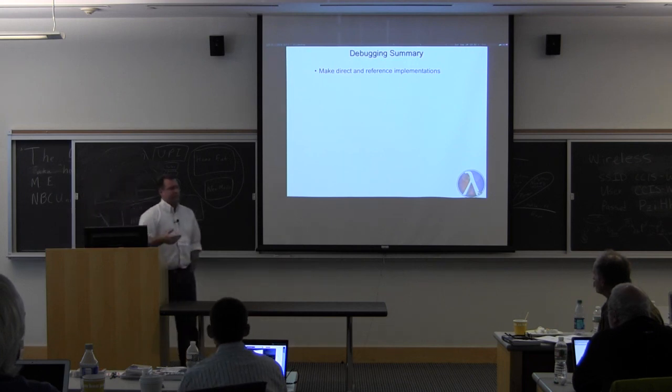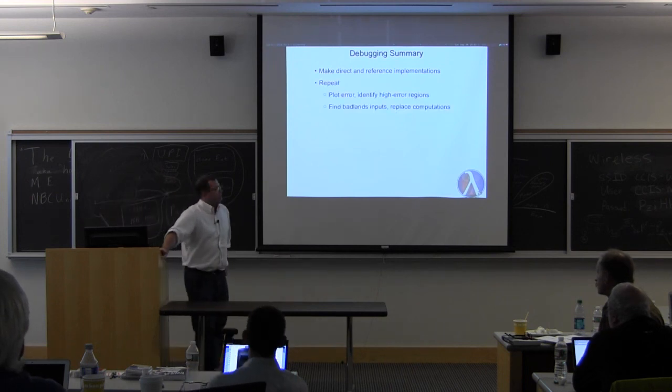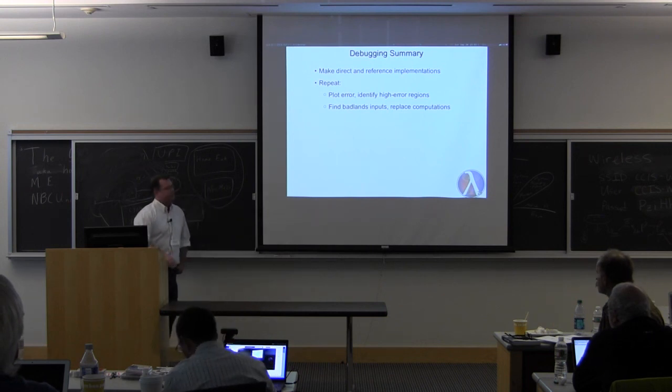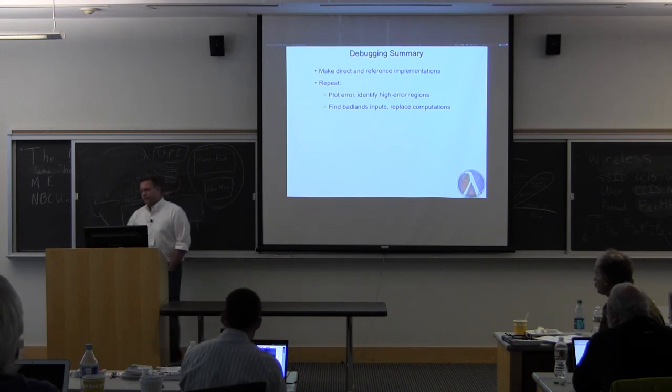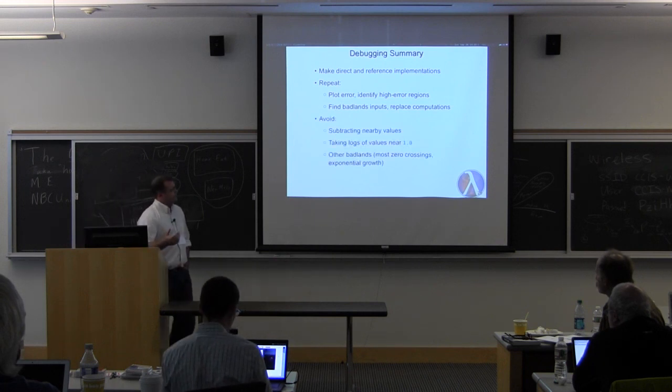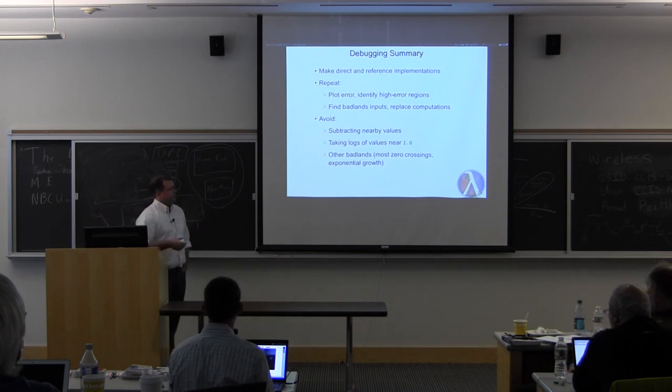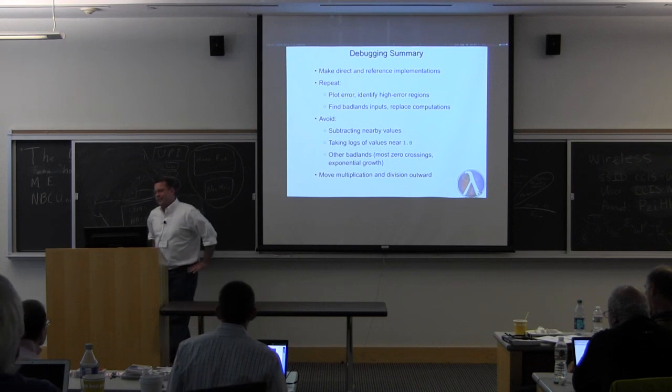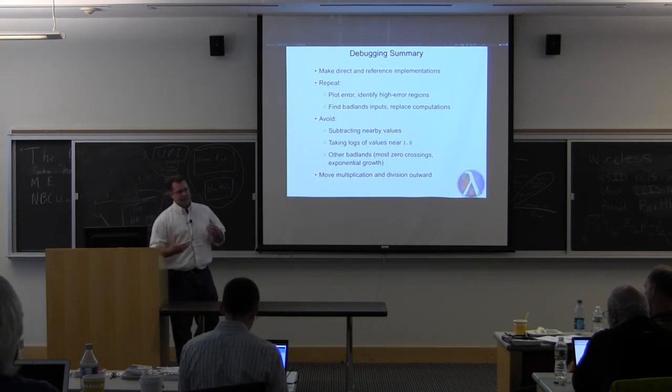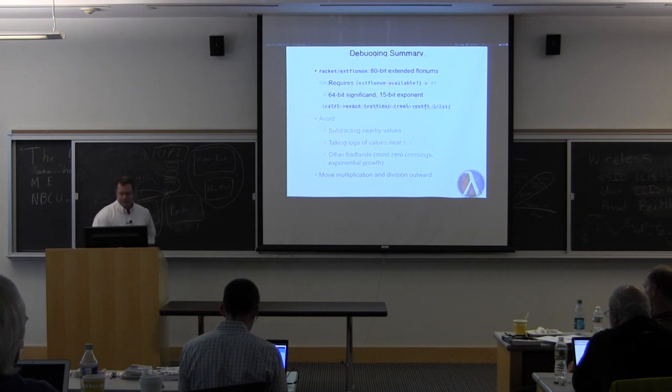So, to debug in the way I'm showing you, here's what you do. Make a direct implementation, a reference one, use big floats to approximate reality. And then repeat this. Find out where you have high error. Zoom in on those spots. Use that to guide your debugging. See if it tells you anything about where you're wandering into the badlands of some function that you're using in your implementation. And replace it. Generally, you should avoid subtracting values that are close together. Taking logs of things that are near one. And most zero crossings, exponential growth, and generally doing floating point. It's a good idea to move multiplication and division outward because they don't depend on having exact inputs. And that usually moves things inward so that they can operate, things that do have bad lines, so they can operate on exact things.